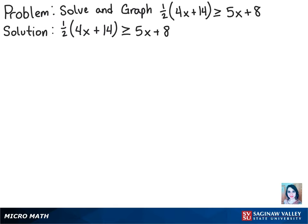So the first thing we want to do is distribute the one-half to both terms in the parentheses. So we get 2x plus 7 is greater than or equal to 5x plus 8.